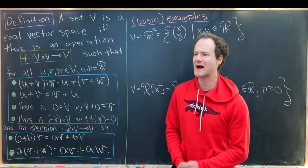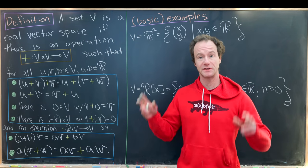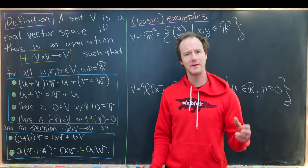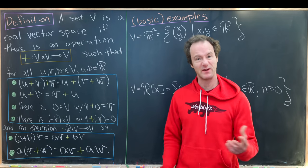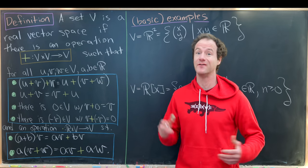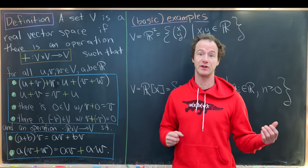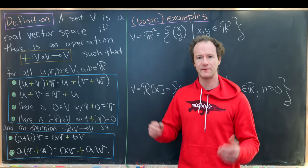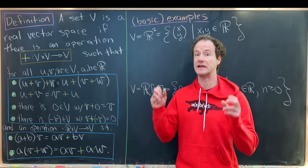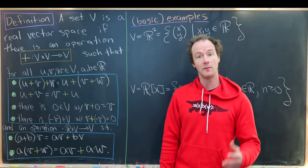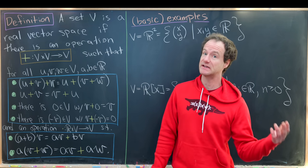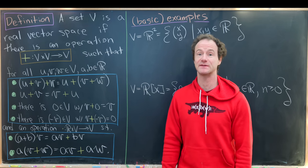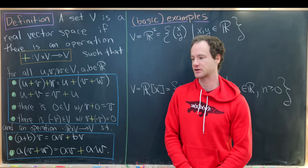Here I want to present one of my favorite examples of a strange vector space. What I mean by a strange vector space is maybe a vector space that you wouldn't think of initially when you're thinking about vectors, or also a vector space that you wouldn't see in natural circumstances. But it's still a set with two operations that satisfy the axioms that define a vector space.